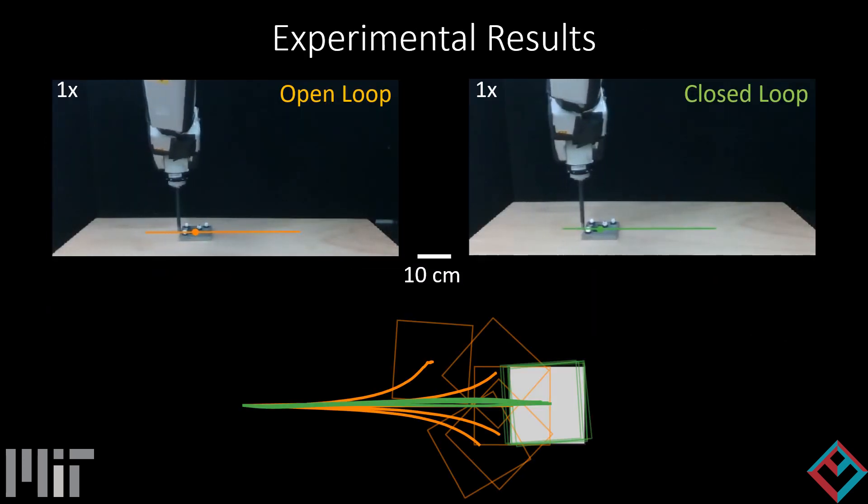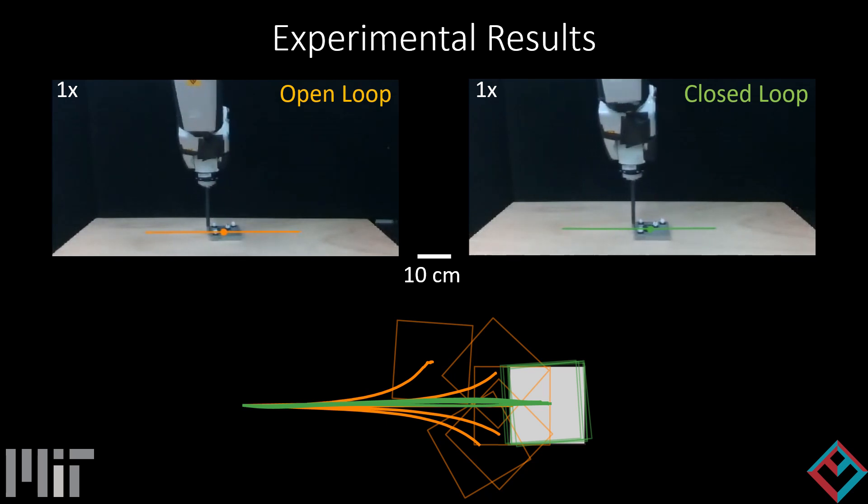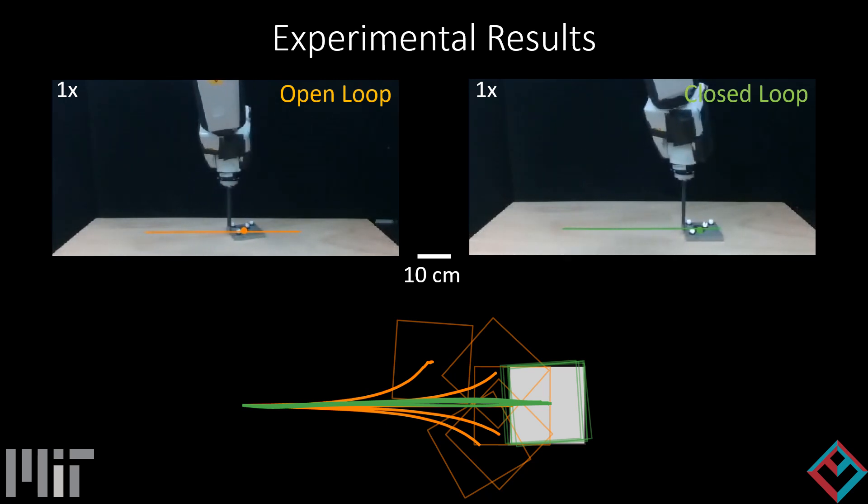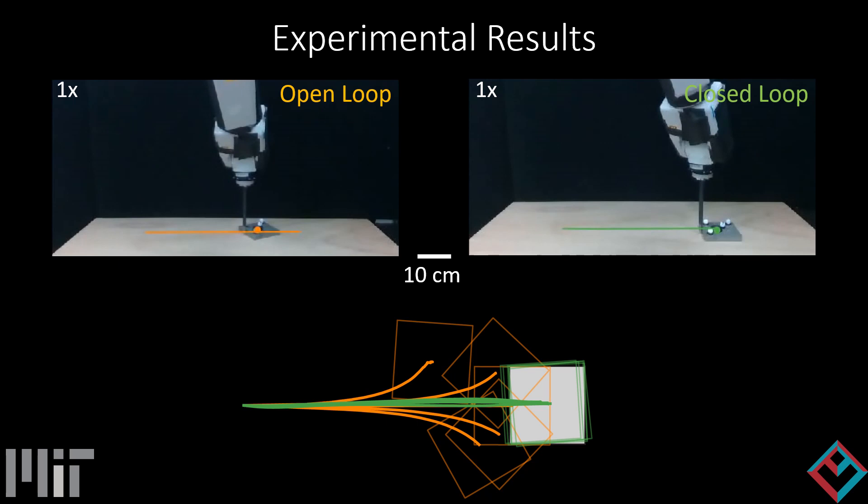We test our feedback controller on a physical pushing system and show that it both stabilizes the slider and reduces the uncertainty in its final pose.